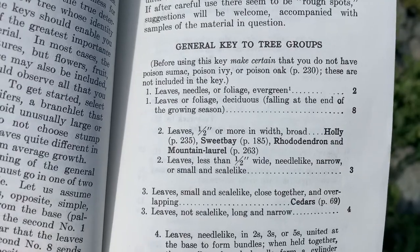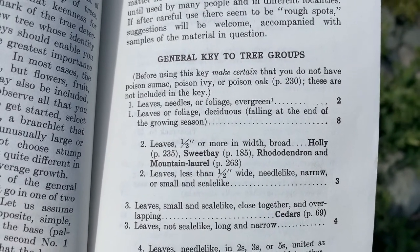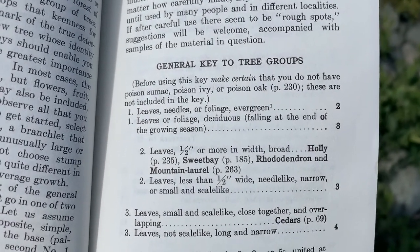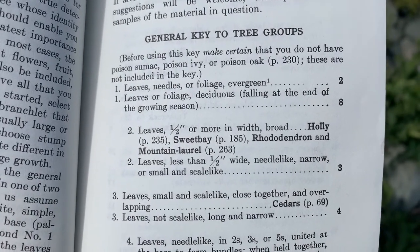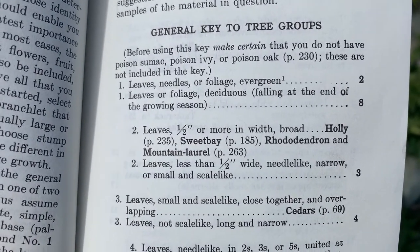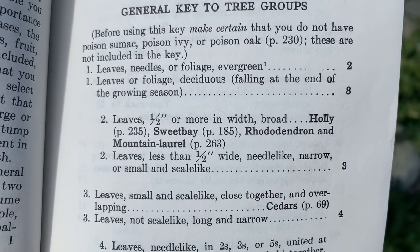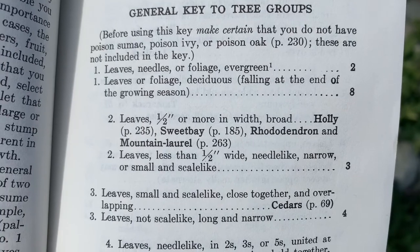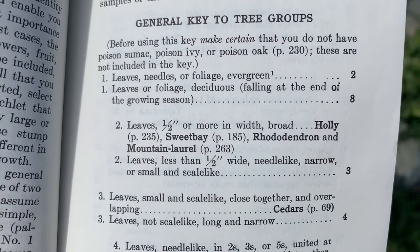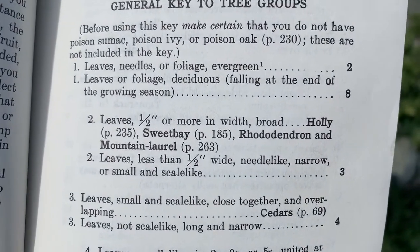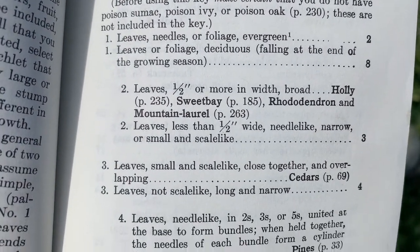Let's start with the two number ones: are the leaves, needles, or foliage evergreen, or are they deciduous? They are definitely evergreen, so I know I'm going to go to number two. Are the leaves half an inch or more in width and very broad, like a mountain laurel or a rhododendron? No, definitely not. They're less than half an inch wide, needle-like, narrow, or small and scale-like. So let's go to three.